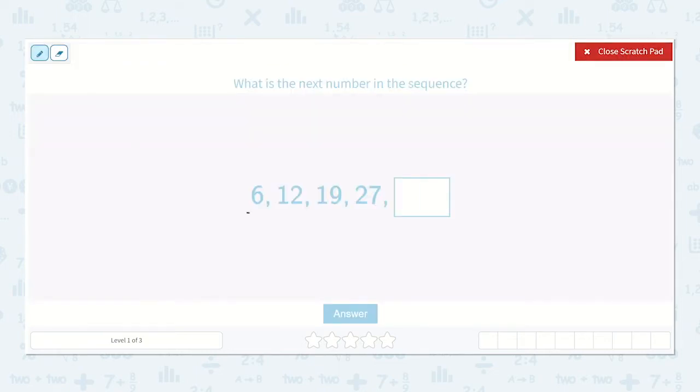We're given the sequence 6, 12, 19, 27, and then our missing number. So here I know 6 plus 6 is 12, that's one of my doubles, so I'm going to say this went up by 6.